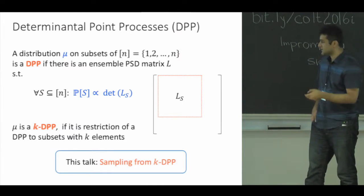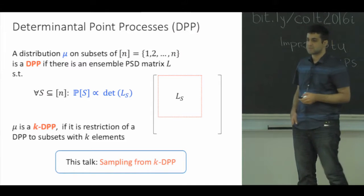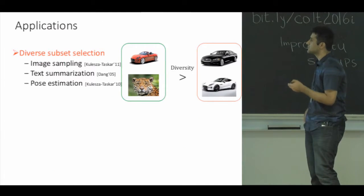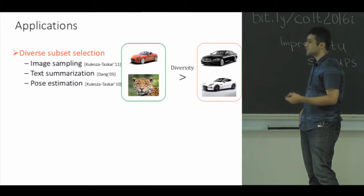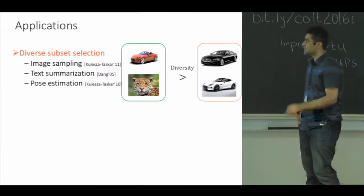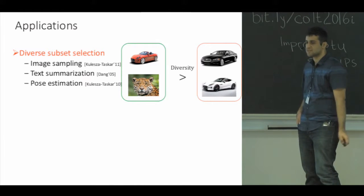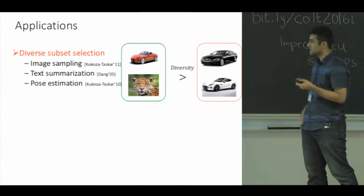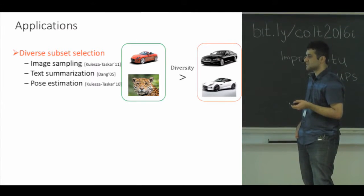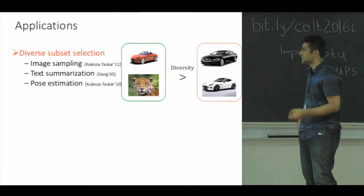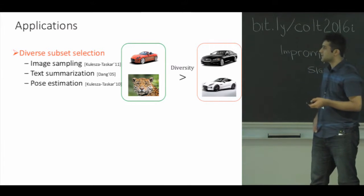Let me motivate our problem by introducing some of its practical and theoretical applications. In practice, DPPs and k-DPPs are mostly used when some notion of diversity is required. In particular, people use them for modeling problems, so-called subset selection, where you have a set of items and you want to find a subset of them which are diverse.